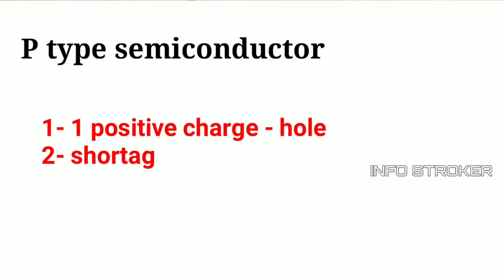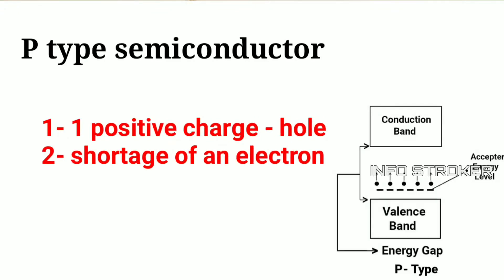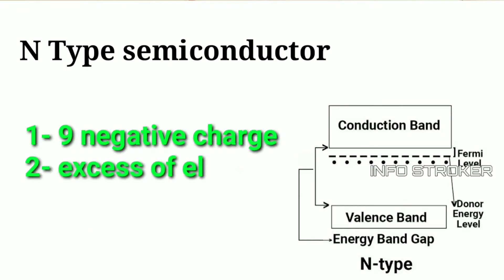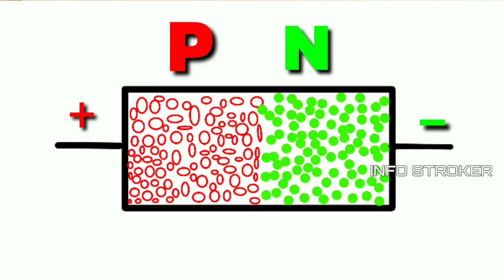The P-type semiconductor will have a positive charge. Throughout the P-type semiconductor there is an excess of electrons. P-type semiconductors and N-type semiconductors are combined to form P-N junction diodes.